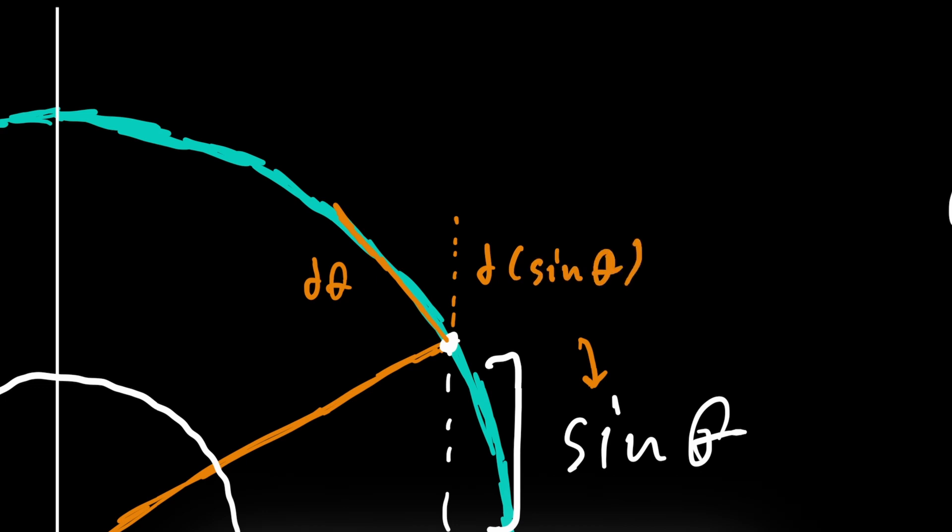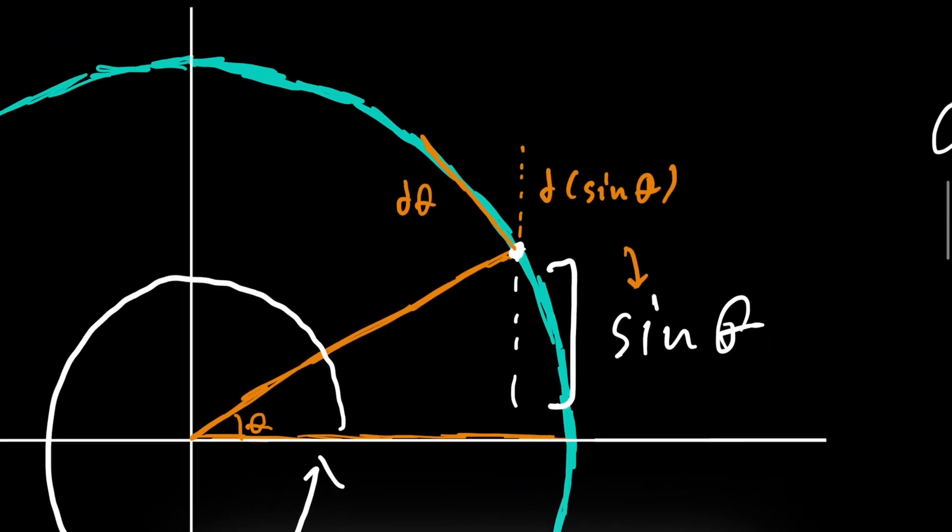Well, an infinitely small change in d sine of theta. So you could draw a little triangle right here. It turns out that this angle here, this angle theta here, is the same as this angle here. So this is also theta.